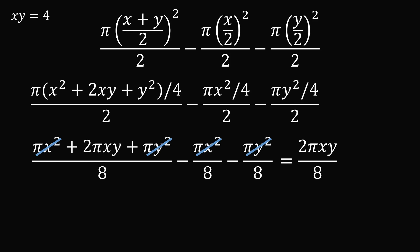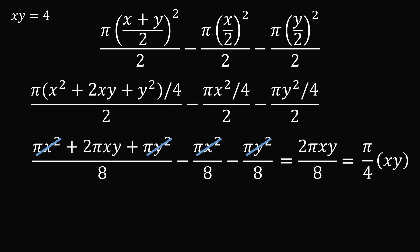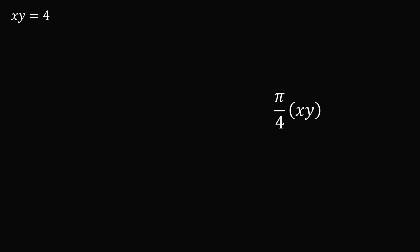And this will simplify to be equal to pi over 4 times x times y. So all of this simplifies to this expression, and now we know that x times y is equal to 4. So we can substitute in 4 right here, and pi over 4 times 4 is exactly equal to pi.